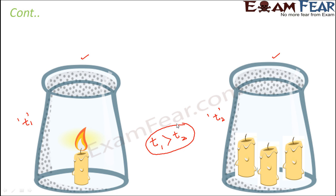In this case, which will be more? We will see that t1 is greater than t2, because the amount of air which is available in both the cases is same, because the glass is of the same size. But in this case there is only one candle to consume that air, but in this case there are three candles to consume oxygen from that air. So the contenders are more.